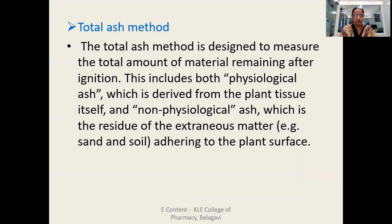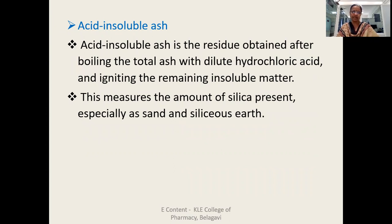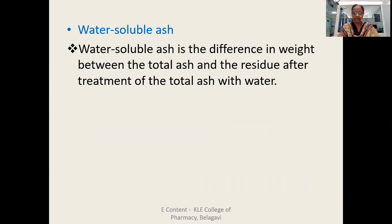The total ash method is designed to measure the total amount of material remaining after ignition. This includes both physiological ash, which is derived from the plant tissue itself, and non-physiological ash, which is the residue of extraneous matter like sand and soil adhering to the plant surface. Acid insoluble ash is the residue obtained after boiling the total ash with dilute hydrochloric acid and igniting the remaining insoluble matter. This measures the amount of silica present, especially as sand. Water soluble ash is the difference in weight between the total ash and the residue after treatment of the total ash with water.